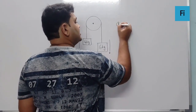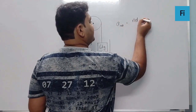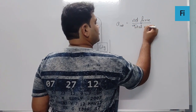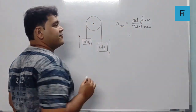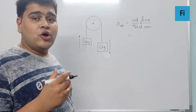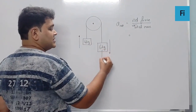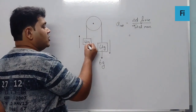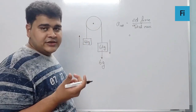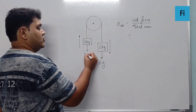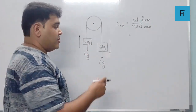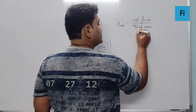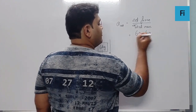Now, the net acceleration is net force upon the total mass. Net force is the vector sum of both the forces acting on the bodies. So in this system, 6 kg — that is 6g — will be the force acting downward, and this one will experience a 4g force acting downward. But this is moving down whereas this is moving up, because of which it is going to be 6g minus 4g.